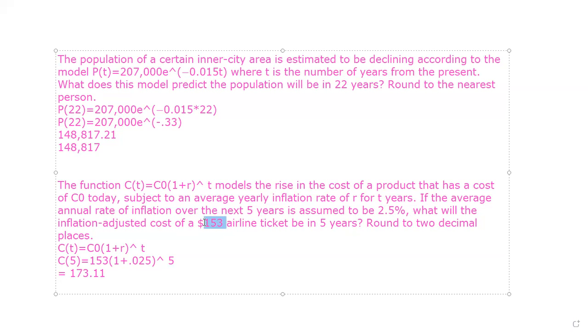So this is our cost today. All right. We've got $153 airline ticket. So if you'll notice that's our cost today and that's our C0. So we're going to plug in 153 for C0.